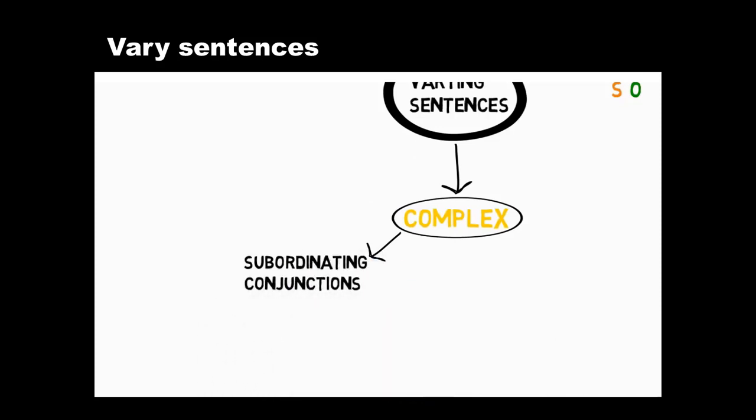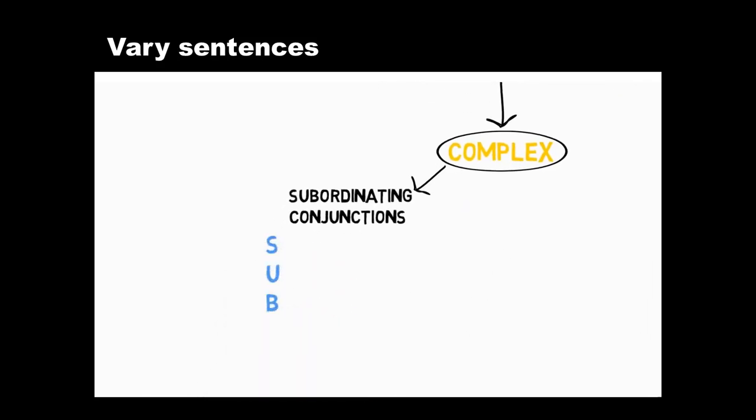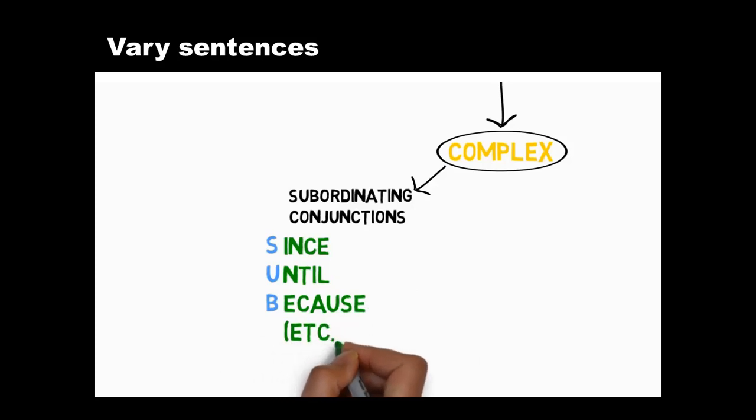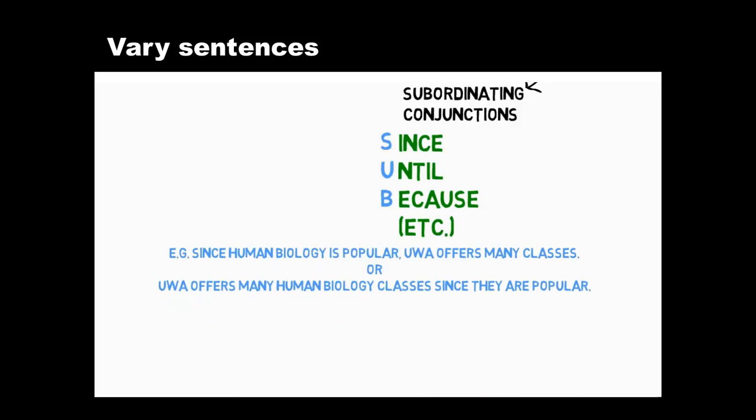First, you can use subordinating conjunctions to join a subordinate or less important idea to a main idea. If you think of the word sub, it will remind you of some examples of subordinating conjunctions. Subordinate clauses can come before or after independent clauses, as in these examples.